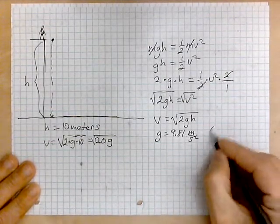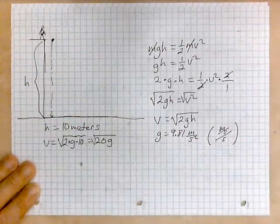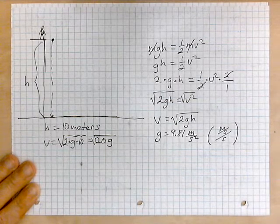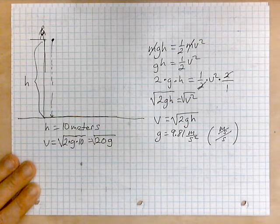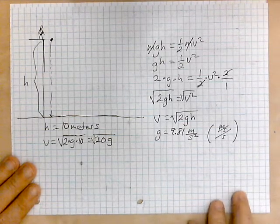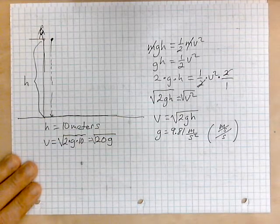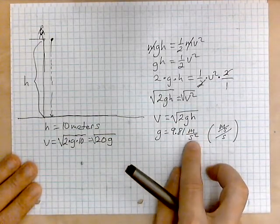It also means meters per second per second because this is an acceleration so it tells you how many meters per second your velocity gains every one second. But it simplifies mathematically into meters per second squared.